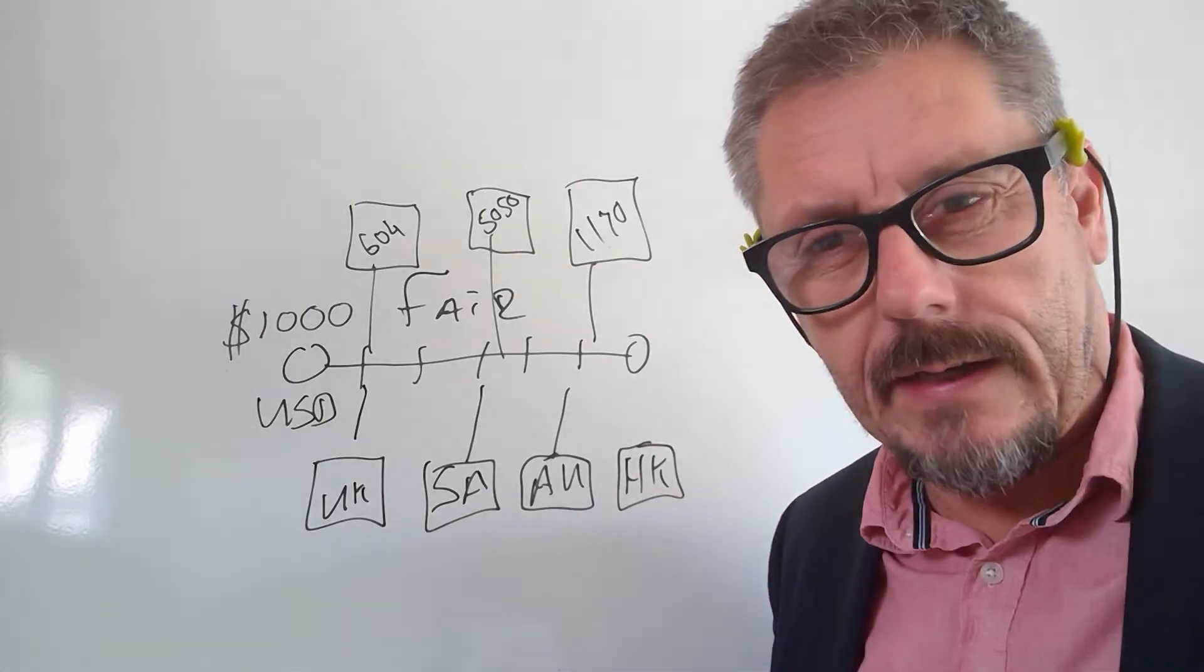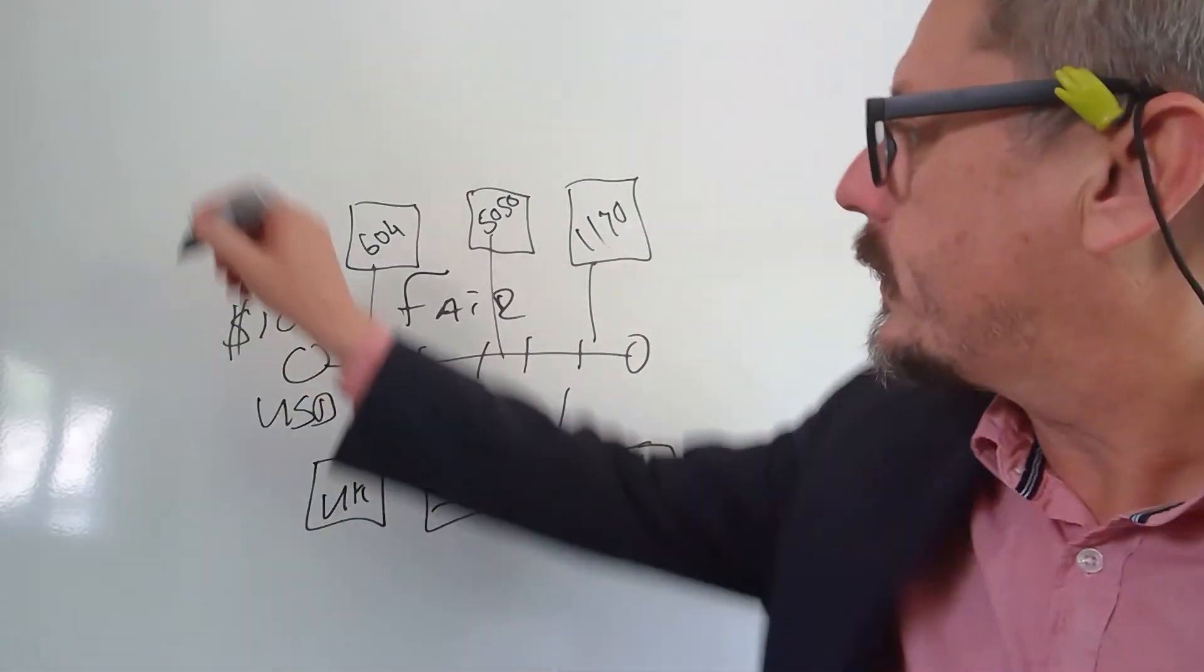And I'm going to fill in those pricing values based on that index. So we've got $1,000. Anyway, so that's how we've worked it out.